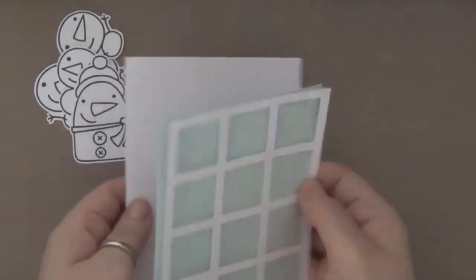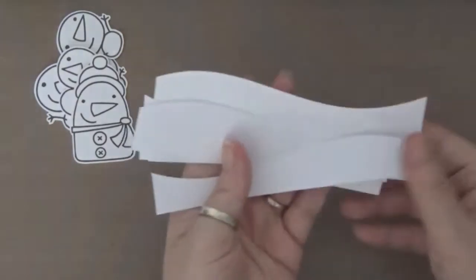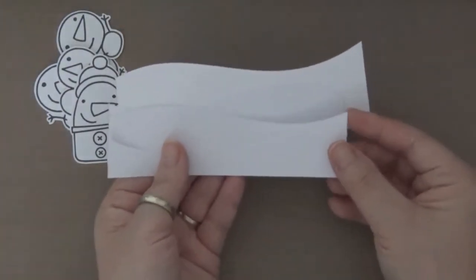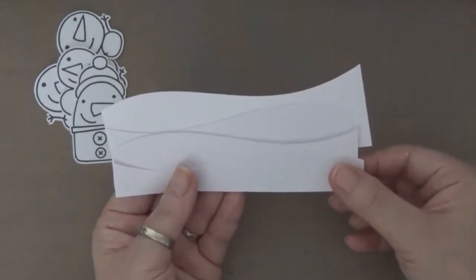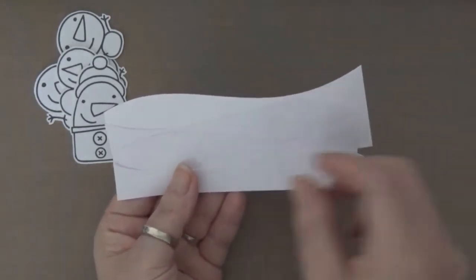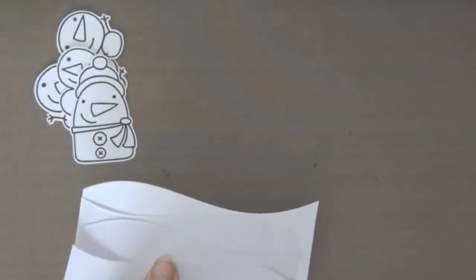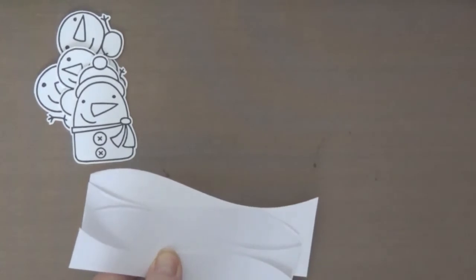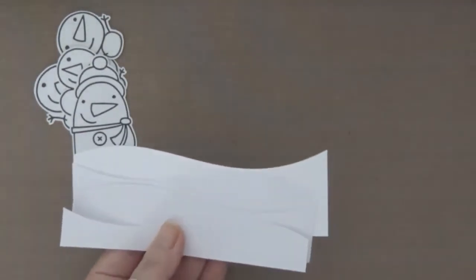So I have a regular A2 size card base I already cut, and I have cut already these snowbanks using the Lawn Fawn Snowbanks, but I didn't use the ones with the stitch. I use the one without. Actually I use the negative portion of it because it doesn't have the stitch border like the rest.